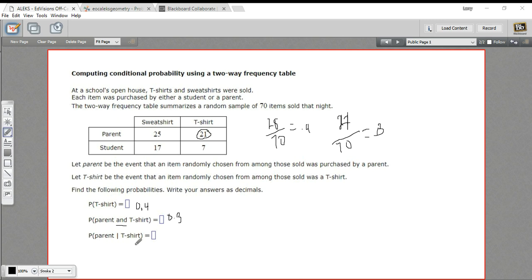Now this last one might look a little odd. It's got this line in the middle. This is a conditional probability. So this says, what's the probability of something being purchased by a parent, given the condition that it's a t-shirt?